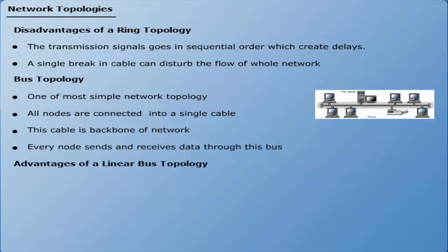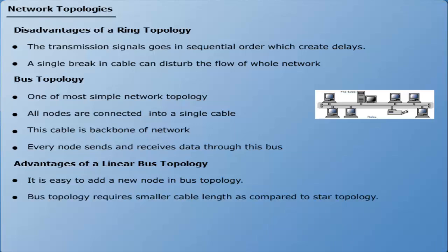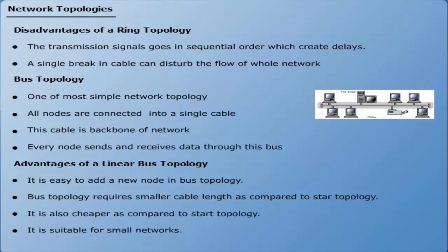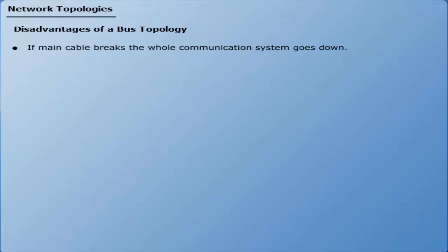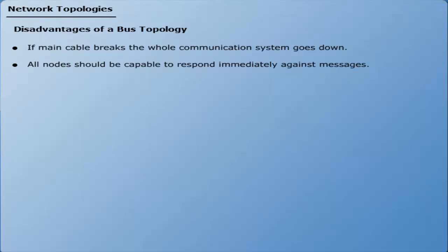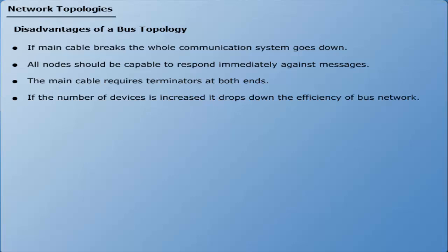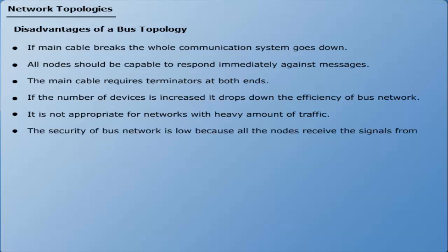Advantages of bus topology: it is easy to add a new node, it requires smaller cable length compared to star topology, it is cheaper than star topology, and it is suitable for smaller networks. Disadvantages of bus topology: if the main cable breaks the whole communication system goes down, all nodes should be capable of responding immediately to messages, the main cable requires terminators at both ends, if the number of devices increases it drops the efficiency of the bus network, it is not appropriate for networks with heavy traffic, and the security is low because all nodes receive signals from the source.